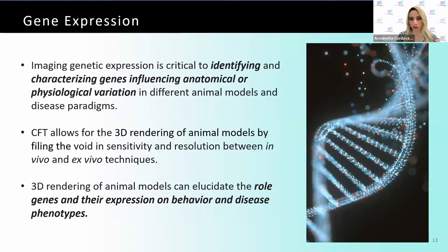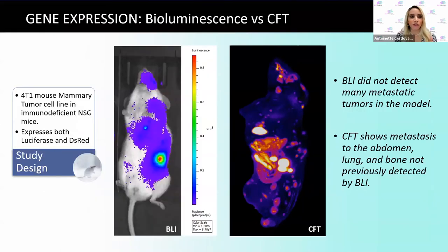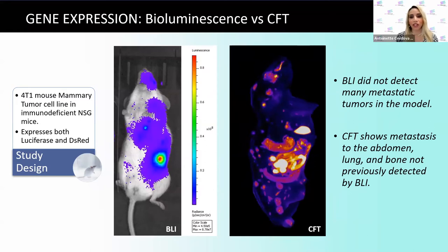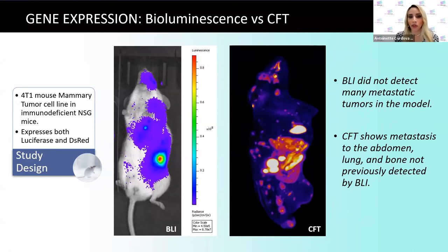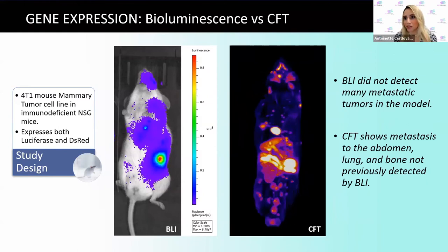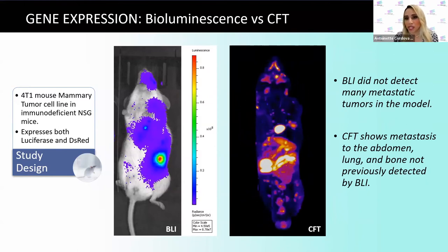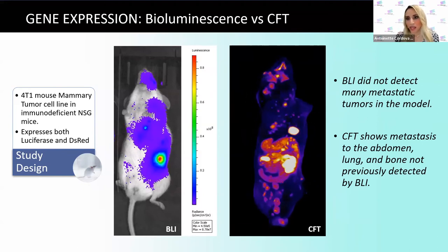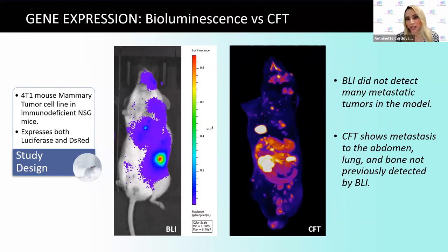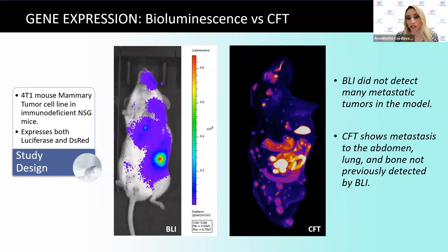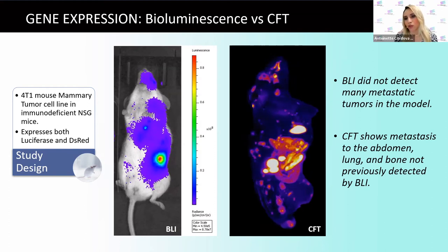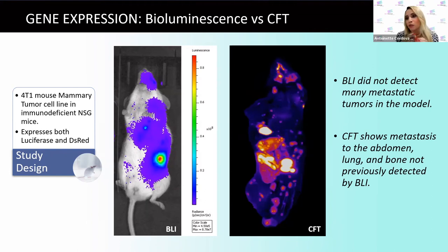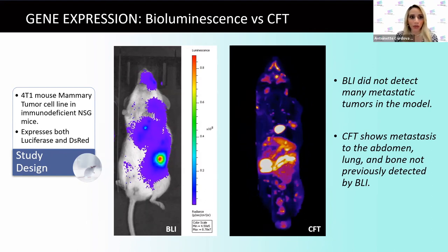For gene expression, here is a 4T1 mouse mammary tumor cell line where cells expressed both luciferase and DS-RED. On the bioluminescence model, you get signal, of course. But when we performed this experiment with CFT, you could actually see lung metastasis that was not visible in the bioluminescence. This highlights the value of this modality and the high-resolution images you get — for those focused on oncology, determining where metastases occur and their locations is absolutely integral.